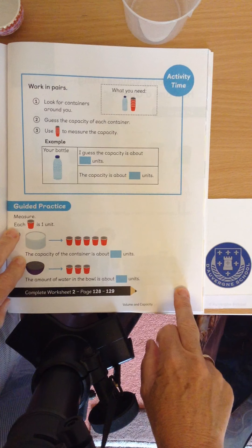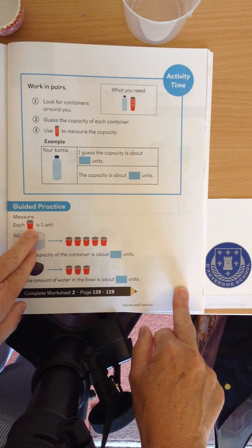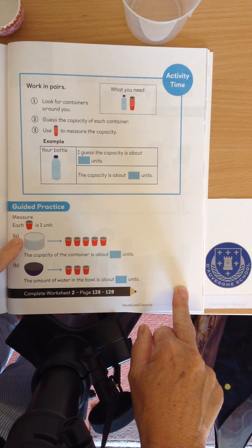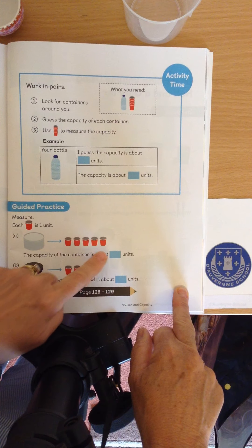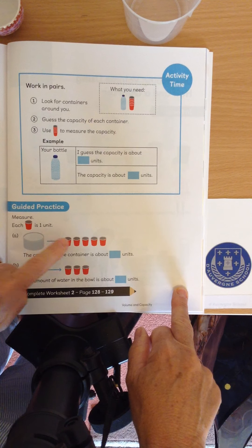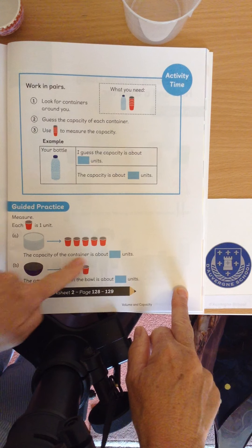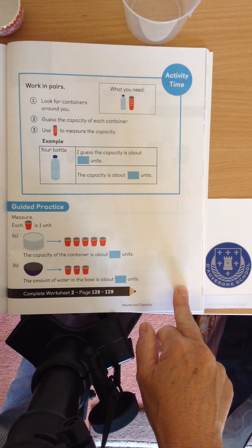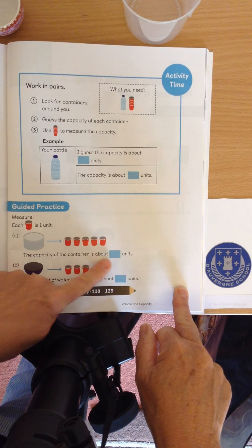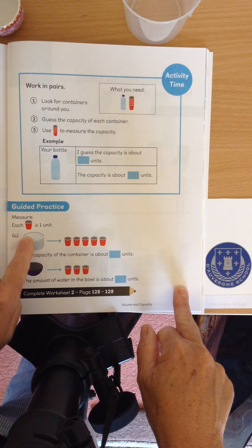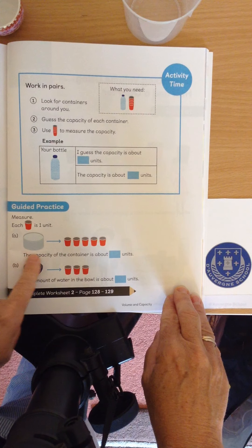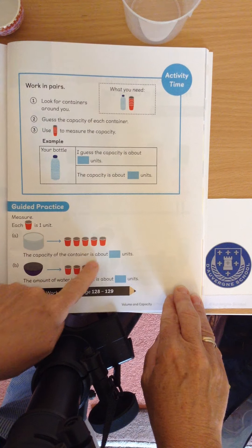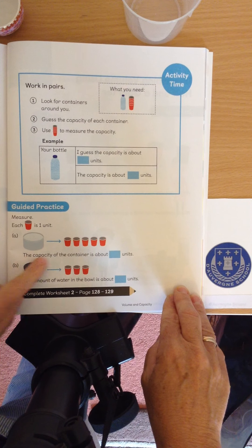Let's have a look at our guided practice. It says each cup is one unit. Here's a container, and it says the capacity of this container is about how many units. If we tipped out the water, it would fill this many cups. That's right, it's five — because we've counted five. The water in here will fill one, two, three, four, five of our little cups. So the capacity of this container is about five units. There might be a little bit left over, but it's about five.